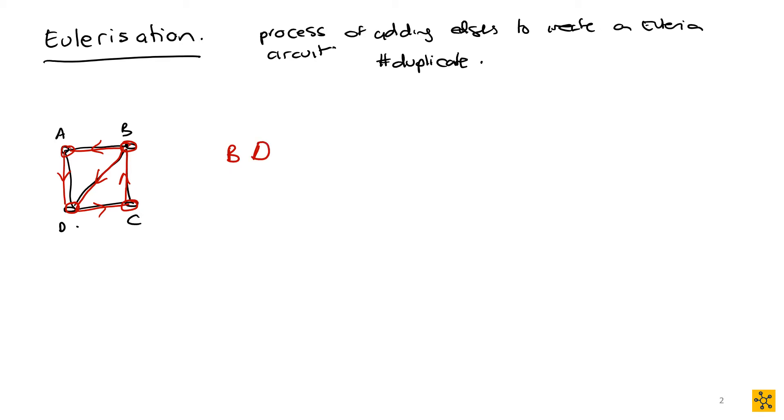Let's just write that down again: B, D, C, B, A, D. Now, if you want an Eulerian circuit, we need to basically end where we began. So we need to have something connecting to the B.